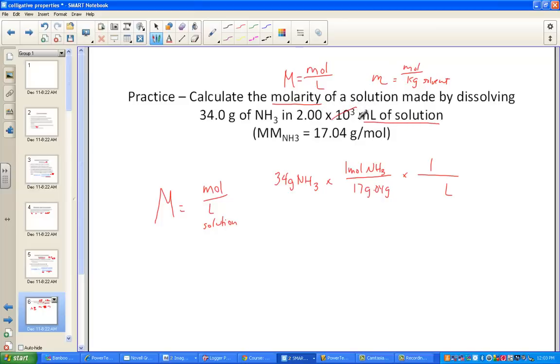Moles per liter of solution. Notice the volume is of the entire solution. 2 times 10 to the 3 milliliters, that's the same as 2 liters. 34 grams divided by 17.04, the molar mass, divided by 2, and we get 0.998 big M, molar units of ammonia. Just a straightforward review of a molarity calculation.